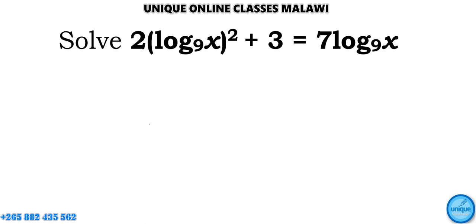Let's see how we can answer this problem. It was asked by one of the students. It reads: (log base 9 of x) raised to the power (x squared plus 3) is equal to 7 times log base 9 of x. We need to solve this.